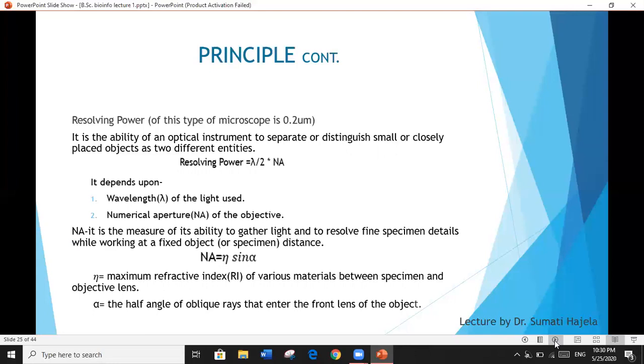Next part of the principle is what is resolving power of this type of microscope. This type of microscope resolves up to 0.2 micrometers or microns. What is resolving power? It is the ability of an optical instrument to separate or distinguish small or closely placed objects as two different entities. That is, if two things are kept very close together, the lens or this machine must distinguish them as separate entities.